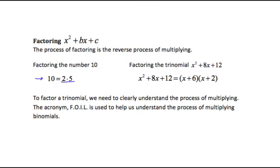What we're going to work on now is factoring trinomials. If we go to factor the trinomial x squared plus 8x plus 12, what we're going to do is reverse the process of multiplying and write this trinomial as a product of 2 binomials — in this case, x plus 6 times x plus 2. To factor a trinomial, we need to clearly understand the process of multiplying.